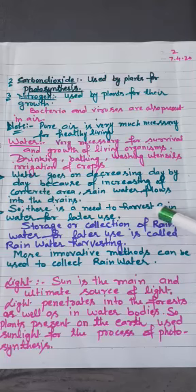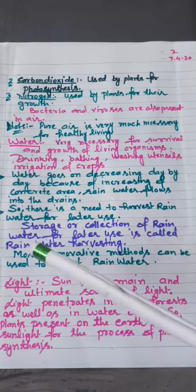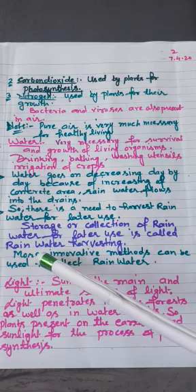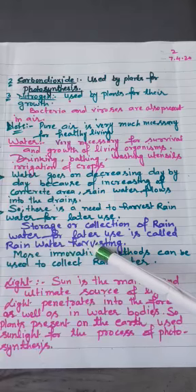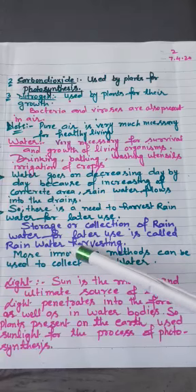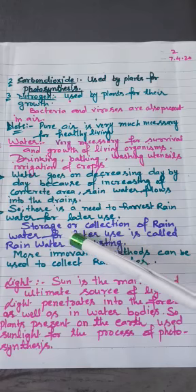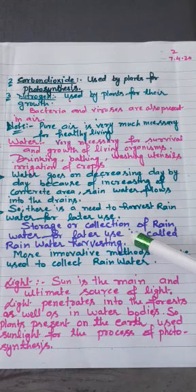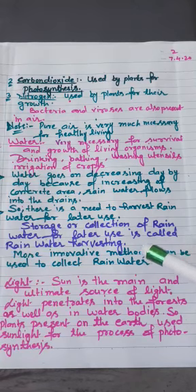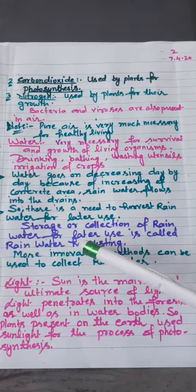So there is a need to harvest rainwater for later use. And one of the best methods to collect rainwater is rainwater harvesting. What is rainwater harvesting? Storage and collection of rainwater for later use by digging underground tanks or other means is known as rainwater harvesting.